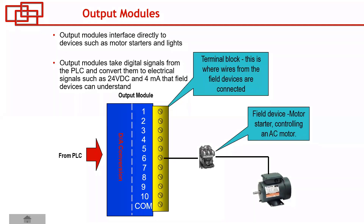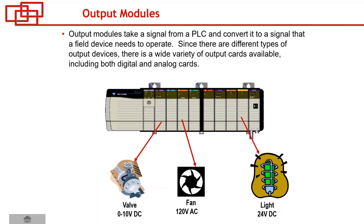The output module converts the digital signal back into an electrical signal because final elements like control valves and motors don't understand zeros and ones — they only understand a standard electrical signal. That's why we need an output module. Examples of devices connected to the output module include fans, lights, valves, and control valves.